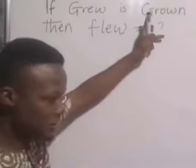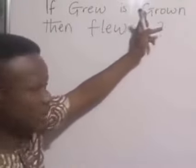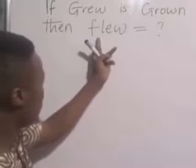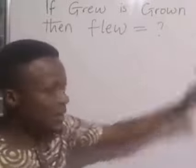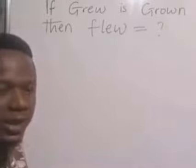So, grew is to grown, of course, the past tense and the past participle. Then flew, which is a past tense. If you want to get the past participle, look at what the mathematical will do.